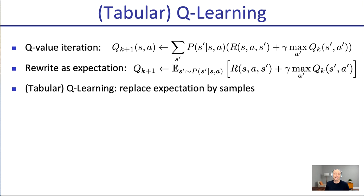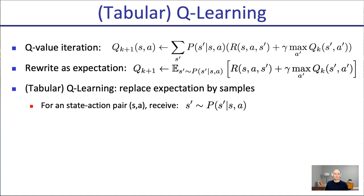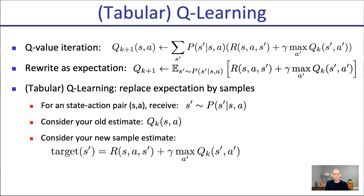Once we have an expectation, it can be approximated by sampling. Instead of using the exact expectation — which we might not be able to compute because we don't have P(S-prime | S, A) — we can experience transitions. The agent collects samples and uses them to estimate the right-hand side. For a state-action pair SA, we receive a next state S-prime, and we have a new target: immediate reward plus gamma times value from the next state. This is a one-sample estimate, but by using many samples over time there's an averaging effect that gets us closer to the precise expectation.